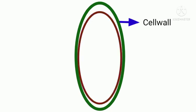The outermost layer of plant cell is cell wall. The inner layer is cell membrane.